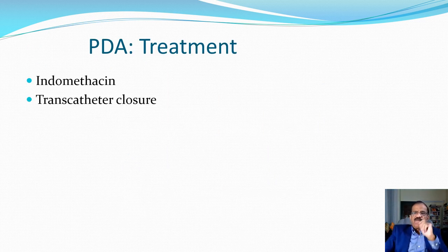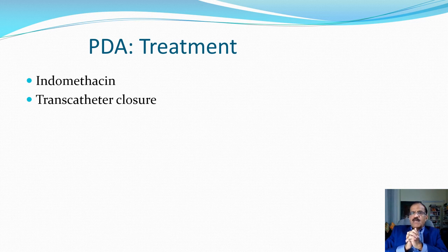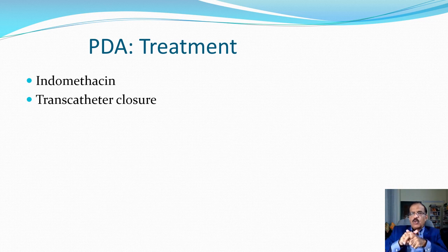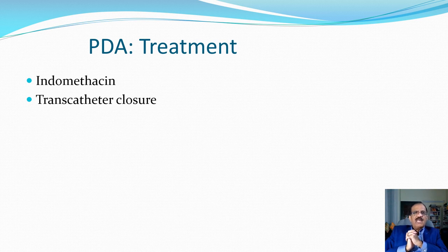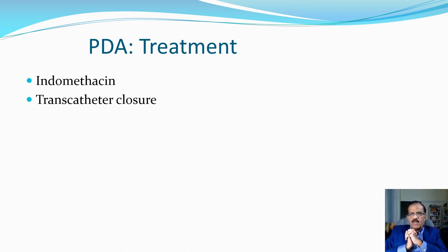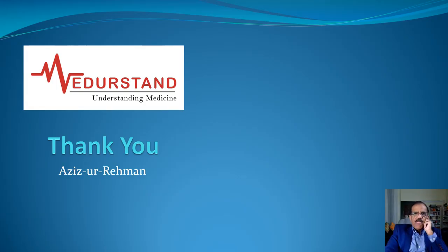Treatment of PDA: if diagnosed at birth, indomethacin can be given, since prostaglandins are involved in keeping the ductus open and indomethacin is anti-prostaglandin. Since diagnosis is usually missed at that time — at least in our part of the world — late diagnosis can be treated with transcatheter closure, available in some centers. Some patients who are not candidates for catheter treatment will still require open heart surgery.